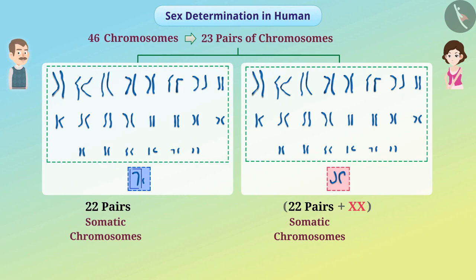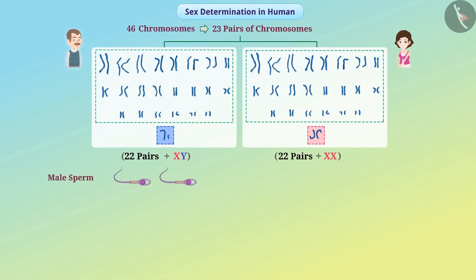In males, the chromosomes of this pair are different. The chromosome of normal size is represented by X, and the chromosome of smaller size is represented by Y. The sex of the zygote is determined on the basis of these chromosomes — X and Y — therefore we call these the sex chromosomes. The pair of sex chromosomes in males is XY, and in females it is XX.